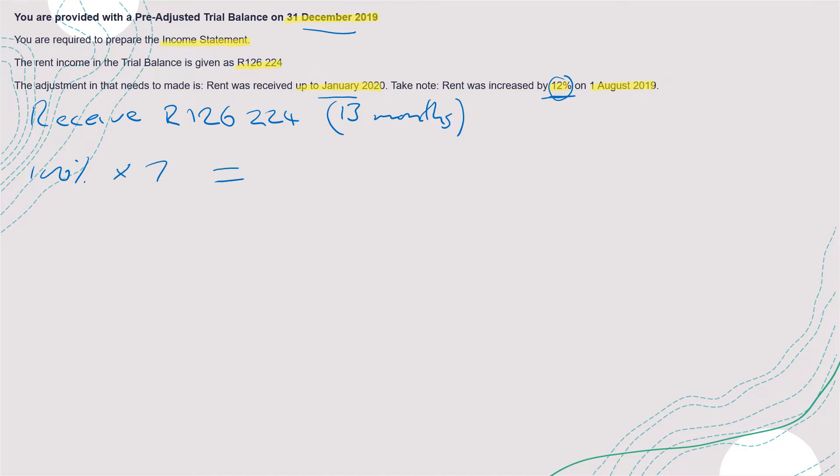This will give you seven hundred. And then from 1st of August to January, that will be six months. Then the rent will be 112% times six. Make sure this gives you 13 every time. If it doesn't give you the amount of months that you need, there's an error somewhere.